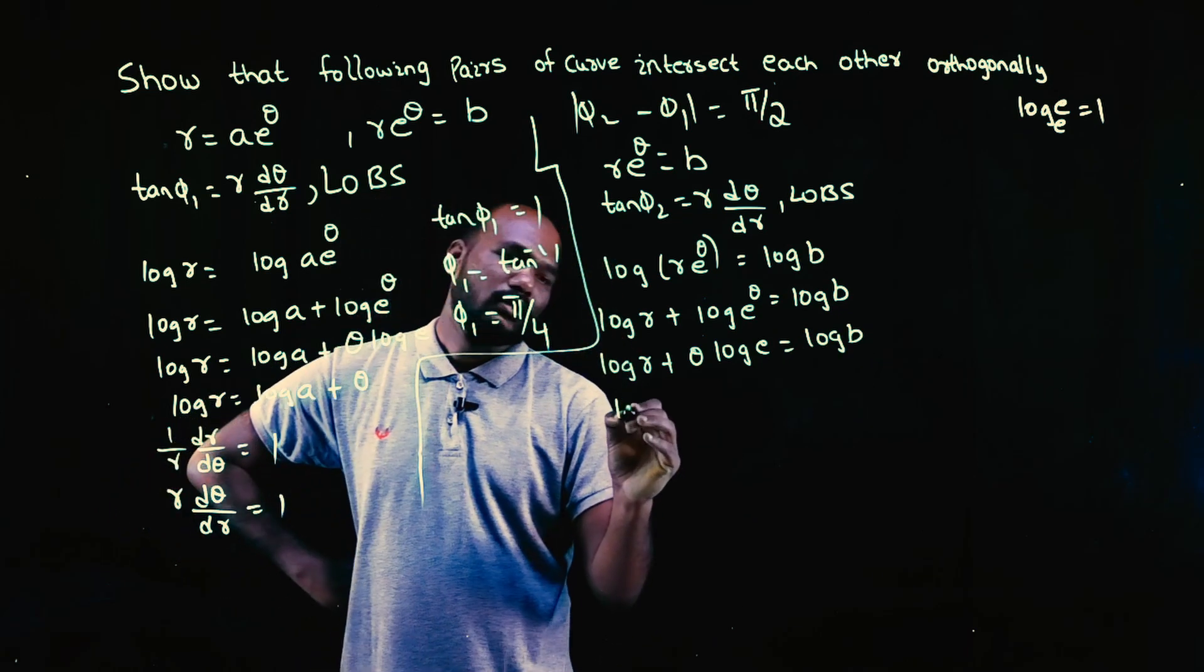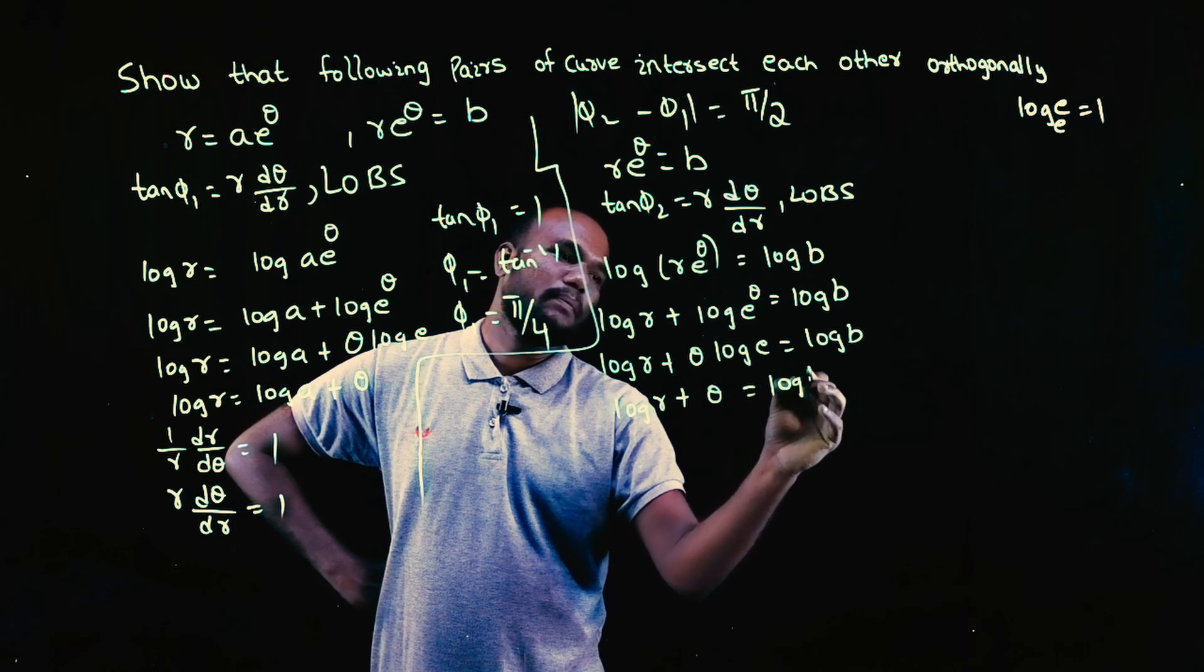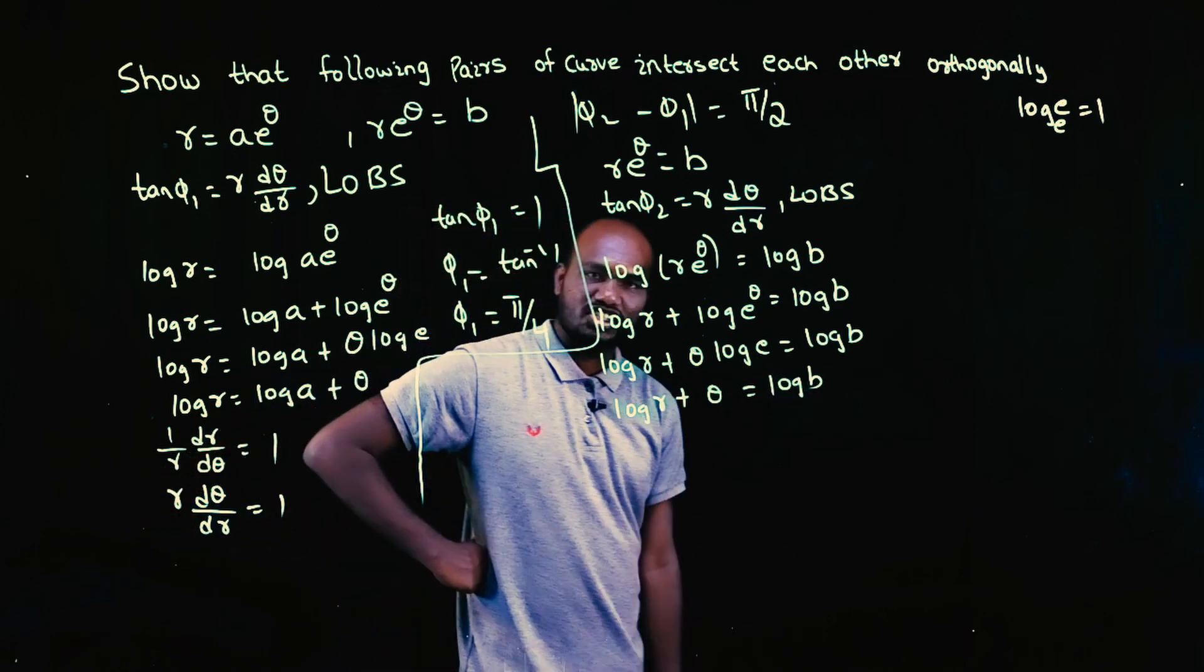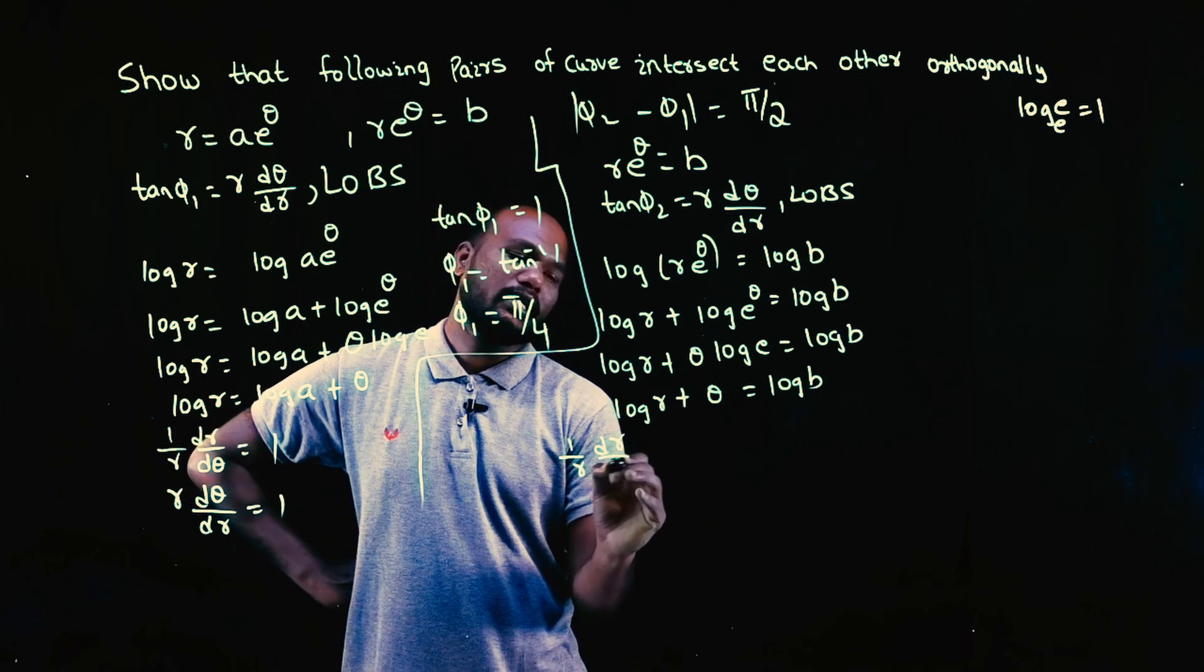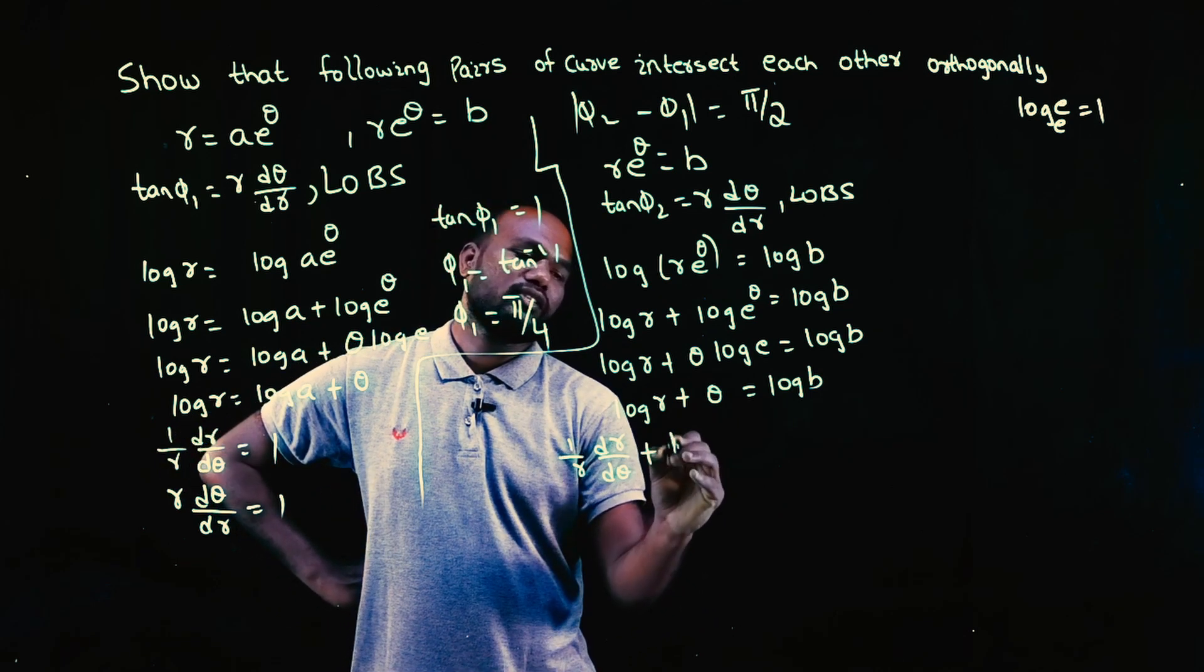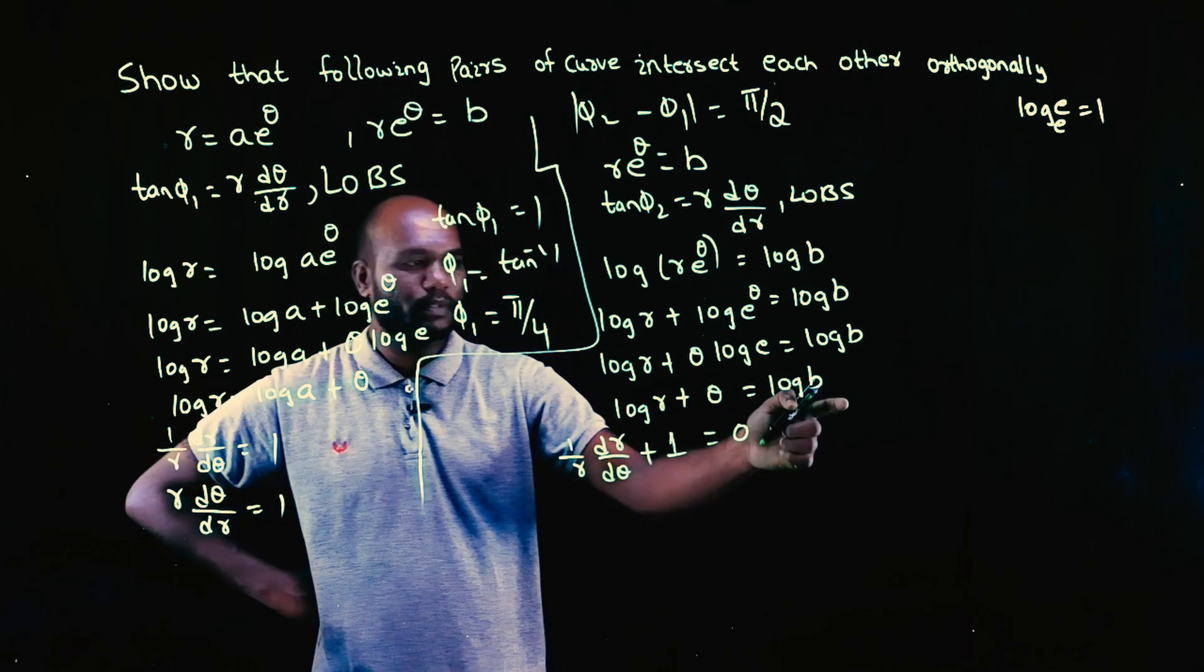Now we can take differentiation. Log r differentiation is what? 1 upon r dr by d theta plus theta differentiation is 1, equal to log b differentiation is zero because b is a number.